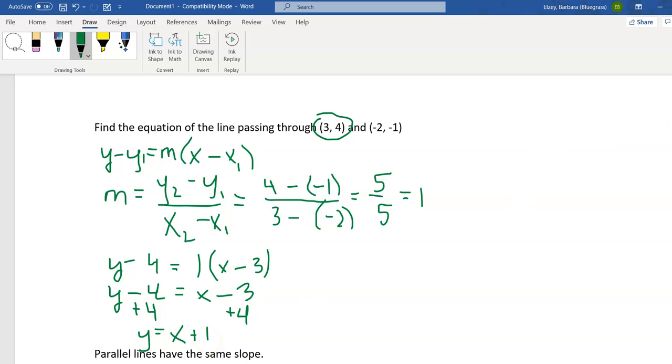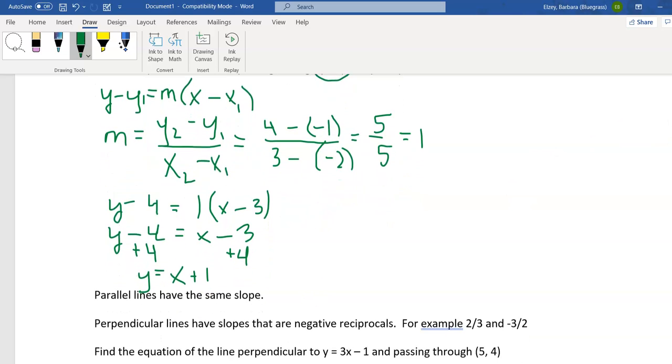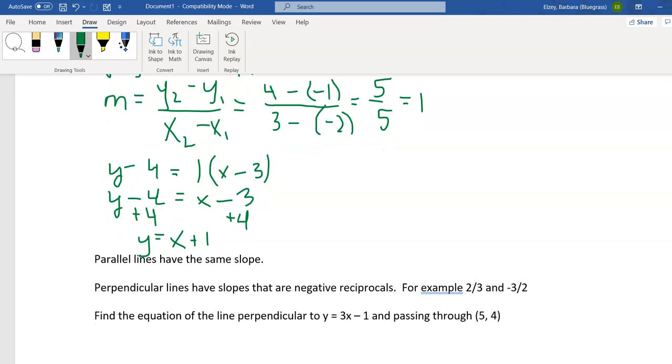Now let's look at another example. First we need a few pieces of information. We know what parallel lines are. Parallel lines never touch one another, they just run in the same direction but never cross. Another thing we need to know is they have the same slope, and that makes sense looking at them.